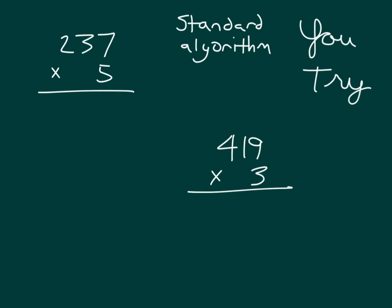Here are 2 problems for you to try using the standard algorithm. Pause the video while you are doing your work. Don't forget your regroups. 5 times 7 is 35. We place the 5 and we regroup the 3. 5 times 3 is 15, plus 3 is 18. We place an 8 and we regroup the 1. 5 times 2 is 10, plus 1 is 11, so that, read it with me, 237 times 5 equals 1,185.